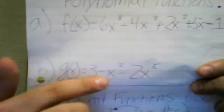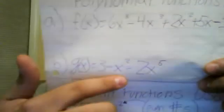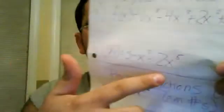So the second part here, g of x equals 3 minus x to the 2nd minus 2x to the 5th.